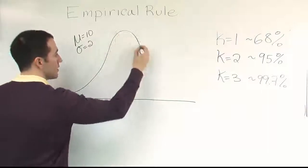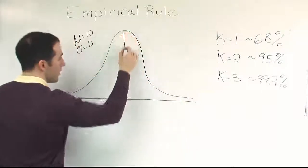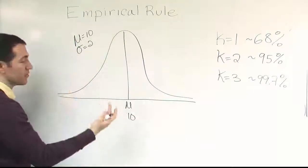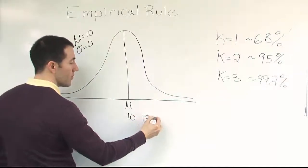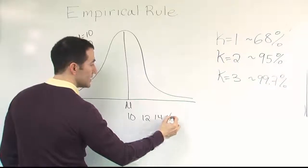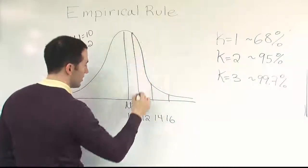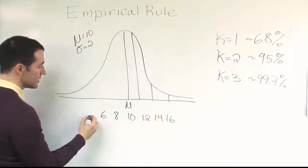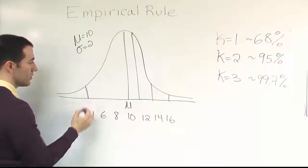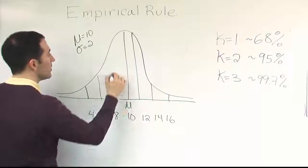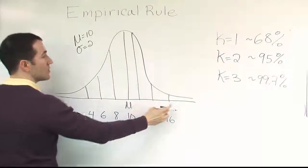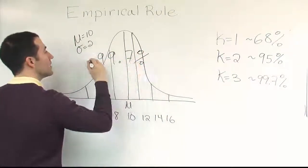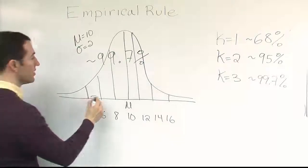Draw the bell curve again. This time, we're going to have mean at 10, but we're not going to go out two standard deviations, but three. That's going to be 12, 14, 16. On the other end, we'll go down to 8, 6, and 4. That total span will capture 99.7% of all the data, approximately.